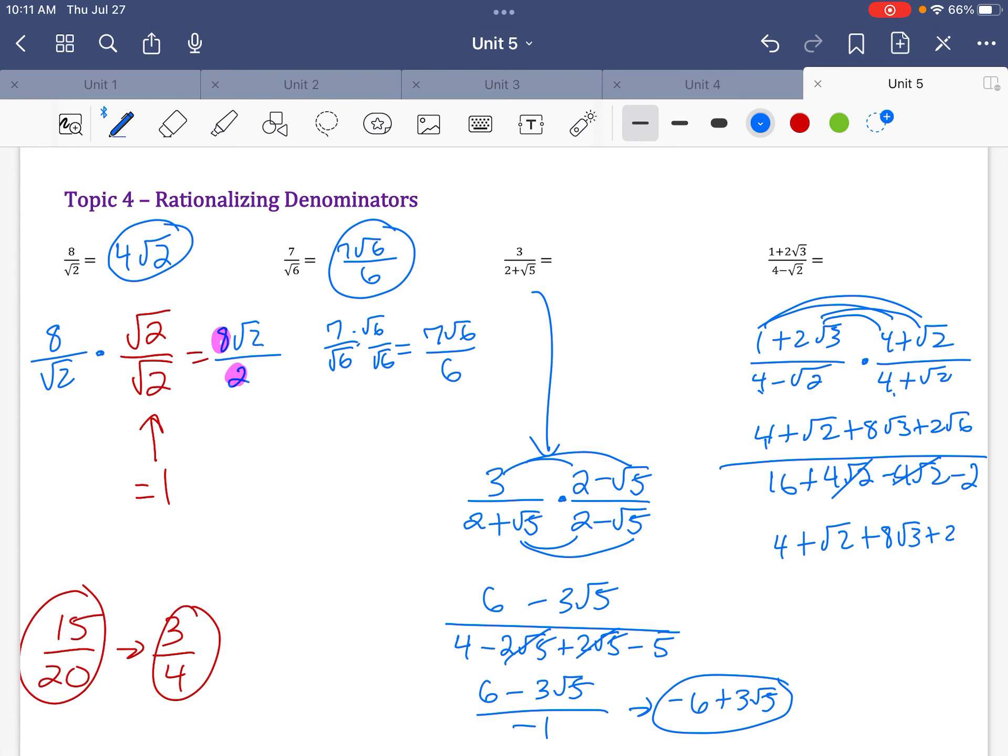So I get 4 plus radical 2 plus 8 radical 3 plus 2 radical 6. All divided by 14.